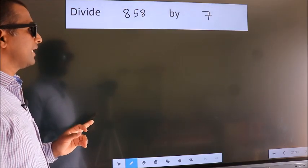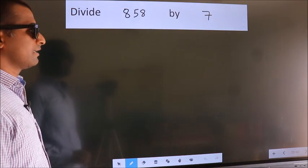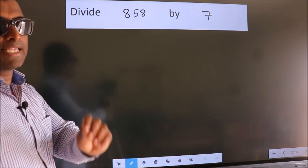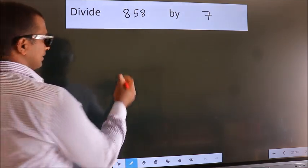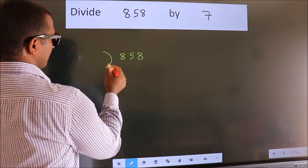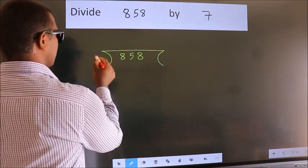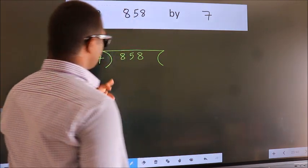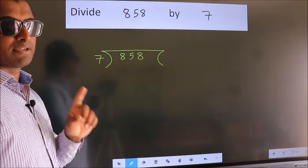Divide 858 by 7. To do this division, we should frame it in this way. 858 here, 7 here. This is your step 1.